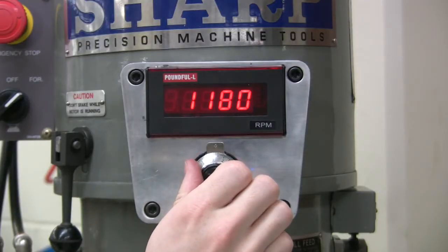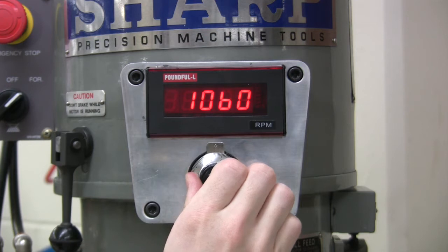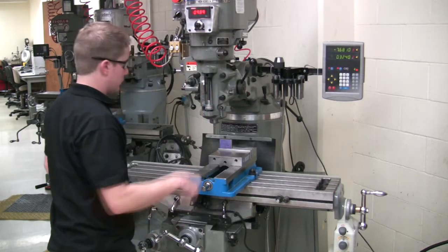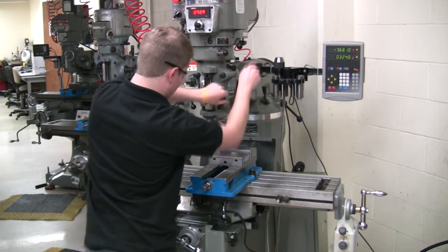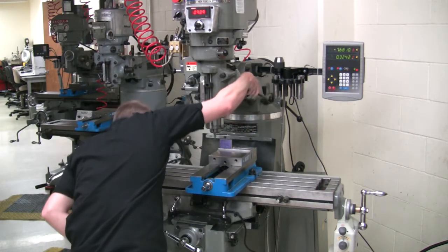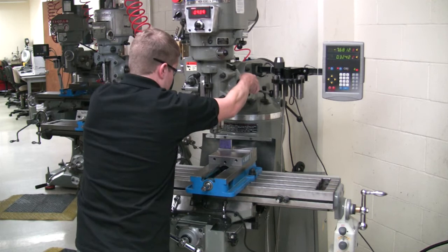Turn the spindle on to 1000 RPM. Lower the spindle and move the edge finder towards the part.